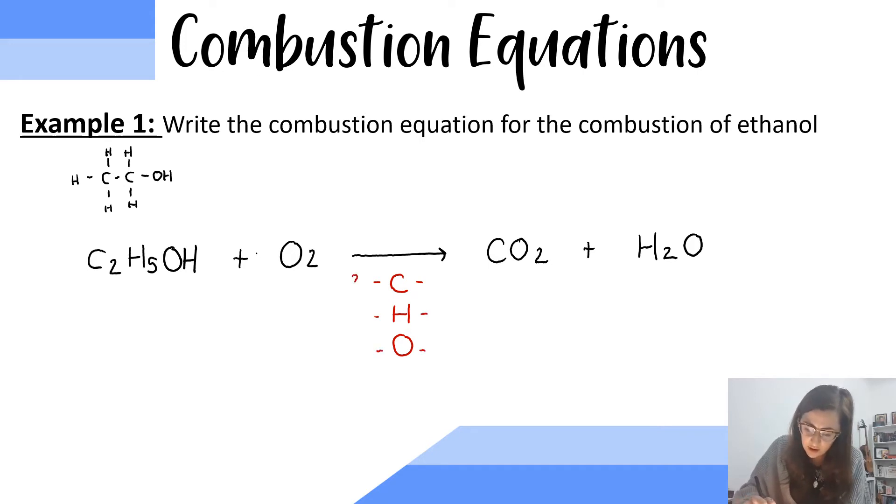So, on the left-hand side, I have two carbons and on the right-hand side, I have one carbon. For hydrogens, on the left-hand side, I have six hydrogens, five and one. And on the right-hand side, I have two hydrogens. And then, for oxygen, on the left-hand side, I have one here and two here, so three. And on the right-hand side, I have two oxygens here and one here, so three.